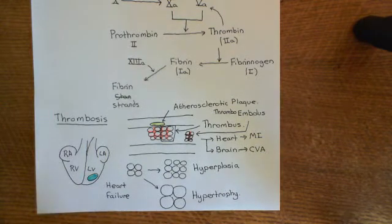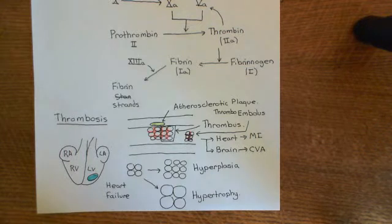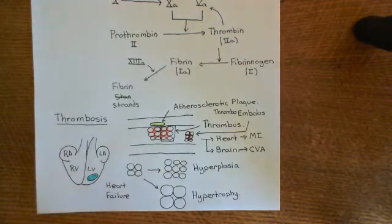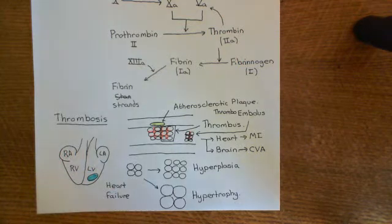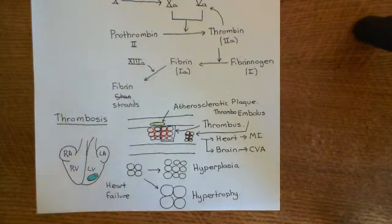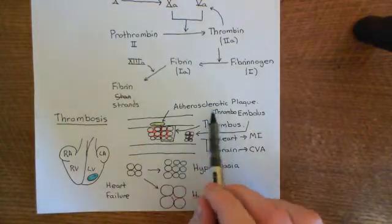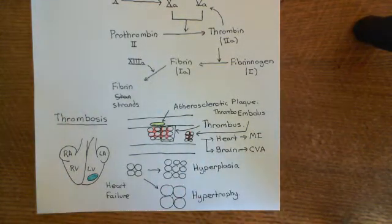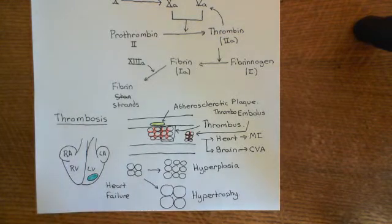Emboli can also be very dangerous. Thrombi can not only be dangerous where they form, but they can also cast off emboli which can affect blood vessels far away from the initial site. This is one of the reasons that atherosclerosis is so dangerous, because it can act as a scaffold for the formation of thrombi.